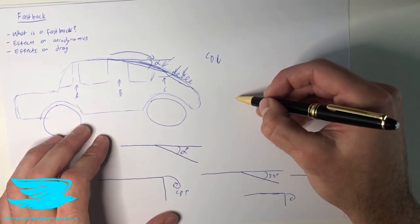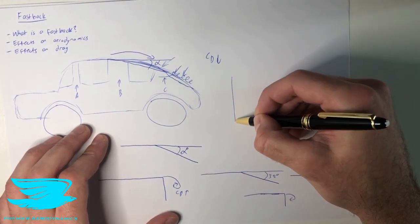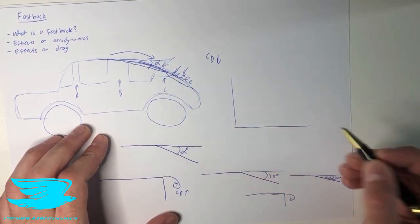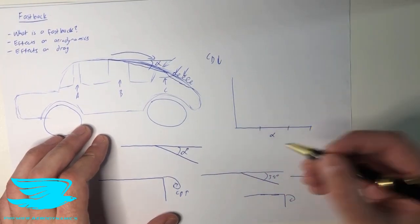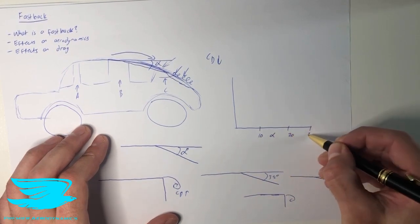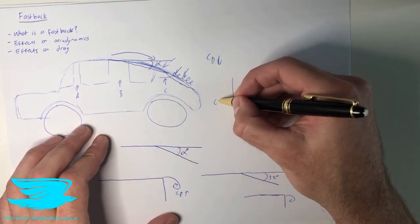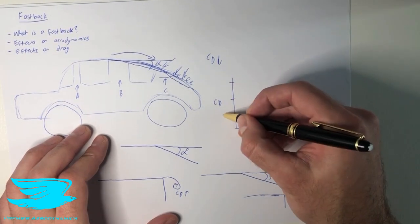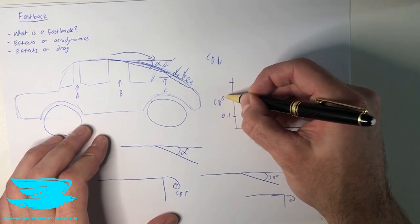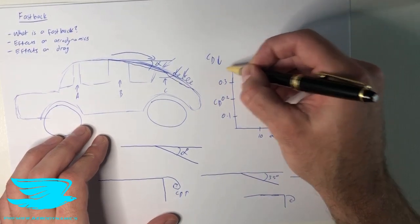Let's draw a graph here to explain what happens to sum this up. So if we have the angle of attack here or the slope angle, and we have 10 degrees, 20 degrees, 30 degrees. And we have the drag coefficient on the y-axis. And this goes to 0.1, 0.2, 0.3, and let's go to 0.4 up here.